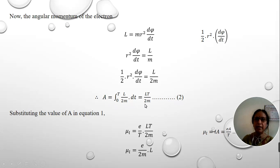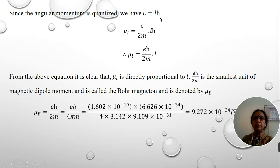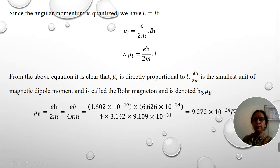Substituting the value of area from equation 2 into equation 1, which is eA/T, and canceling T, we get the magnetic moment μ equals eL/2m, where L is the angular momentum. According to wave mechanics, the value of L is l·ħ, where ħ equals h/2π. Substituting this, we get the final expression for the magnetic dipole moment of the electron due to its orbital motion. It is clear that the magnetic dipole moment depends on the quantum number l. This smallest unit of magnetic dipole moment is called the Bohr magneton, denoted by μ_B.